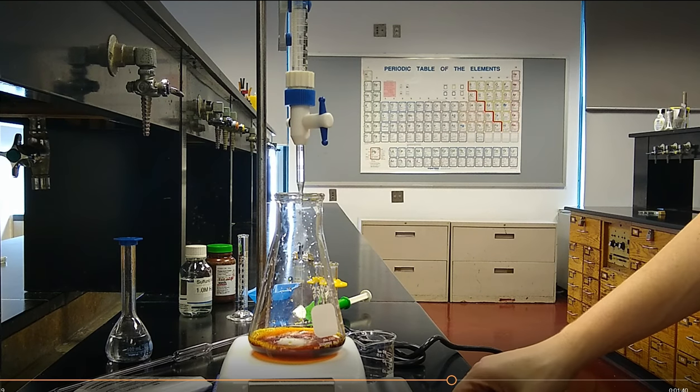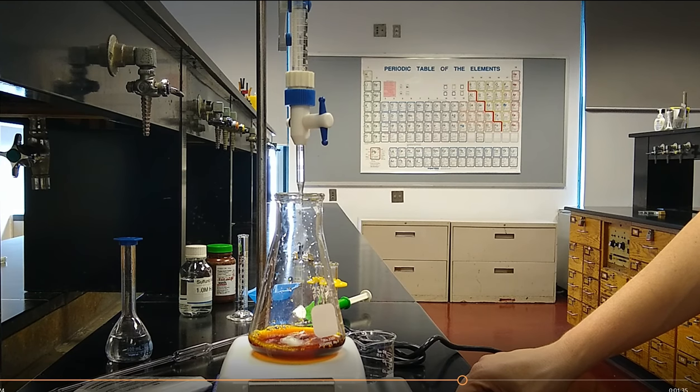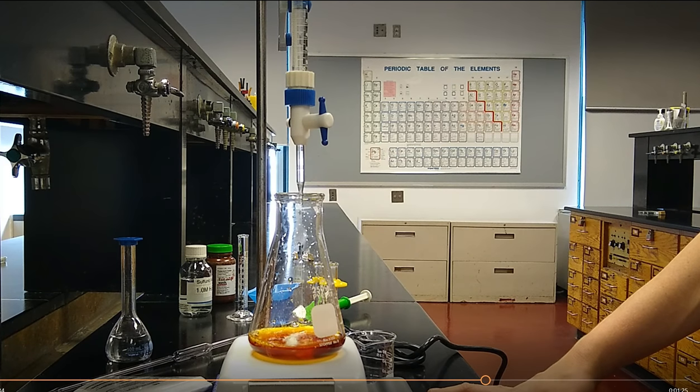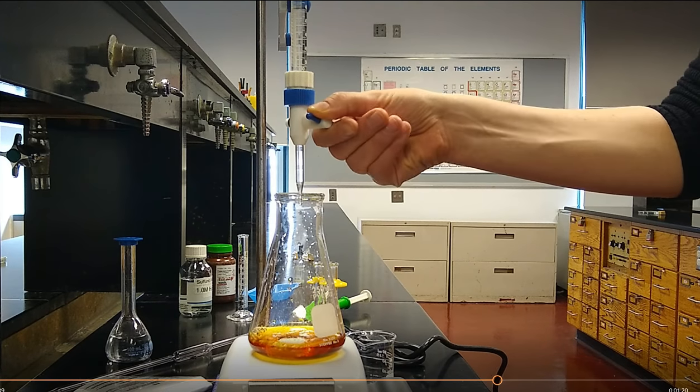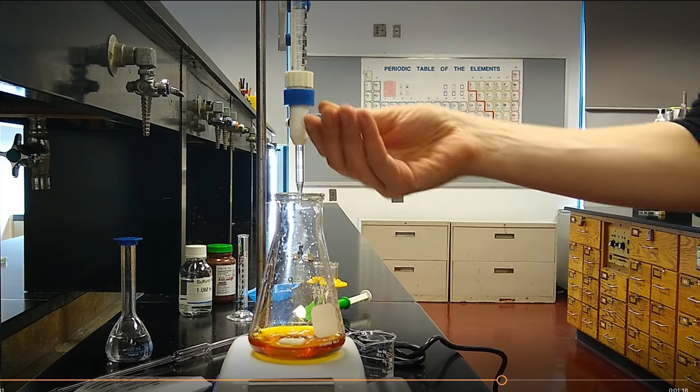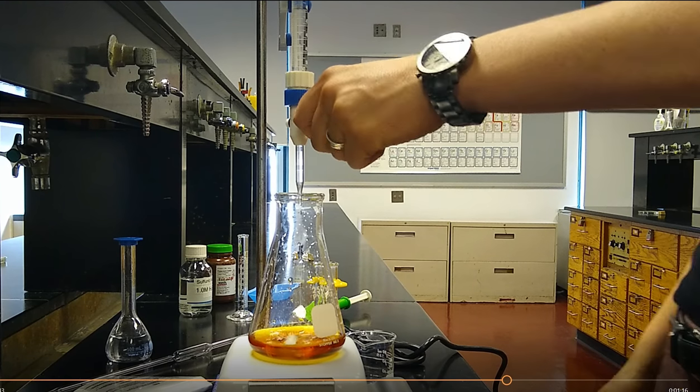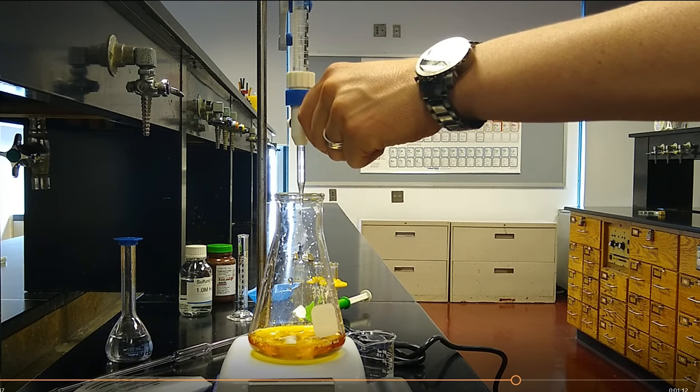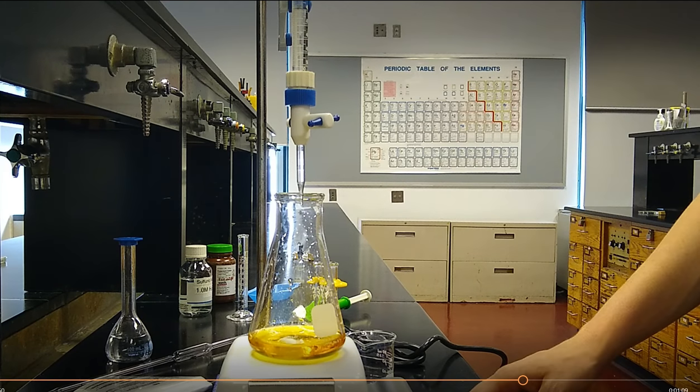Over that first arrow, write S2O3 2-. That is the ion that we are adding that's going to be involved in the reaction. The sodium ion is a spectator. You can see as the titrant is added to the analyte, we're seeing a gradual change in color. That reddish brown color is disappearing, and it's more of a yellow color. You want to keep adding the titrant until you get to a pale yellow. So in that second Erlenmeyer flask, write yellow.